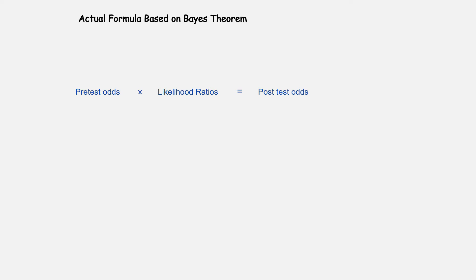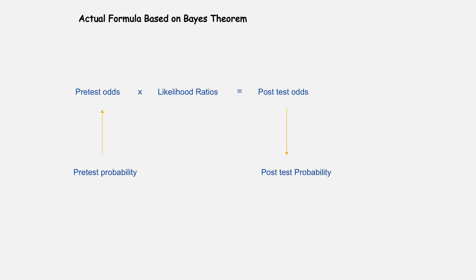The actual formula based on Bayes theorem is: pre-test odds multiplied by likelihood ratios gives the result in post-test odds. So first we estimate pre-test probability and then convert pre-test probability to pre-test odds. When we get results in post-test odds, we again convert post-test odds to post-test probability.